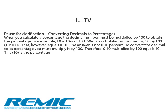Now, let's take a look at how and why we convert decimal points to percentages. When you calculate a percentage, the decimal number must be multiplied by 100 in order to obtain the percentage. For example, 10 is 10% of 100. We can calculate this by dividing 10 by 100, however this equals 0.10. The answer is not 0.10. To convert the decimal to its percentage, you must then multiply it by 100. Therefore, 0.10 multiplied by 100 equals 10, and 10 becomes the percentage.